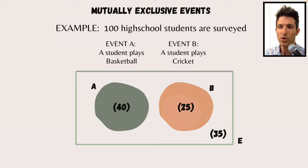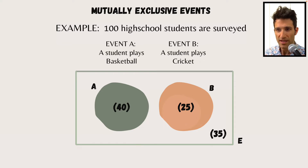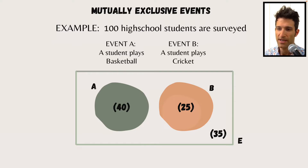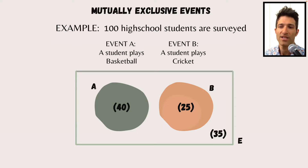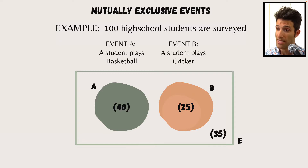Diving straight in, let's have a look at mutually exclusive events. We're using an example of 100 high school students that have been surveyed — let's presume they've been questioned on a variety of different factors facing their schooling. Event A is defined as a student playing basketball, and event B is a student electing to play cricket.